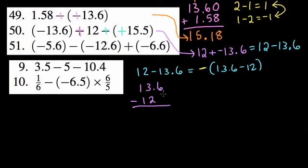So how do we do this? Well, why don't I place value? Add the 0 here so I can see what's happening. 6 minus 0, 6. 3 minus 2 is 1. 1 minus 1 is 0. And the answer would be 1.6, but we're reversing it. It's going to be negative 1.6.